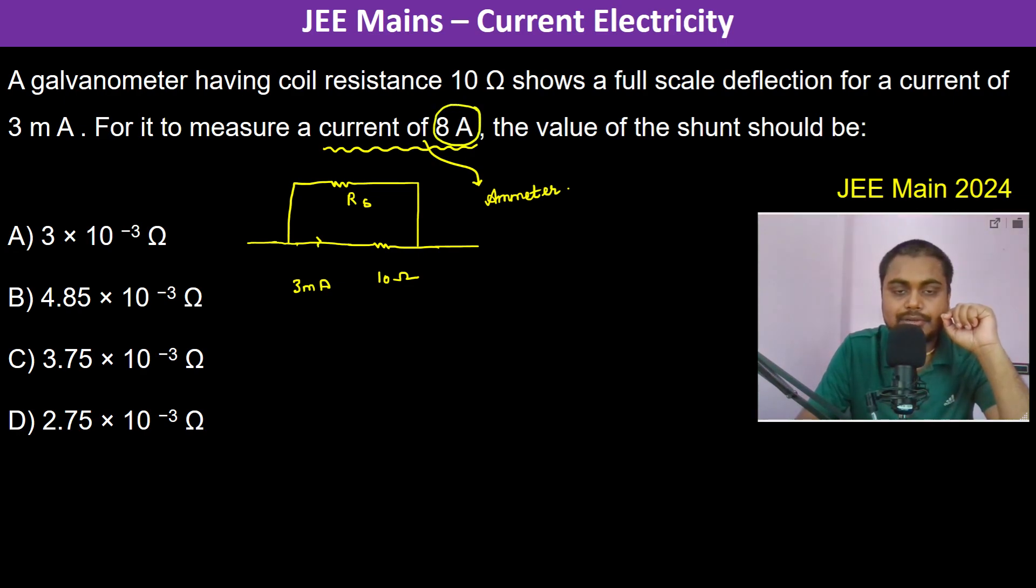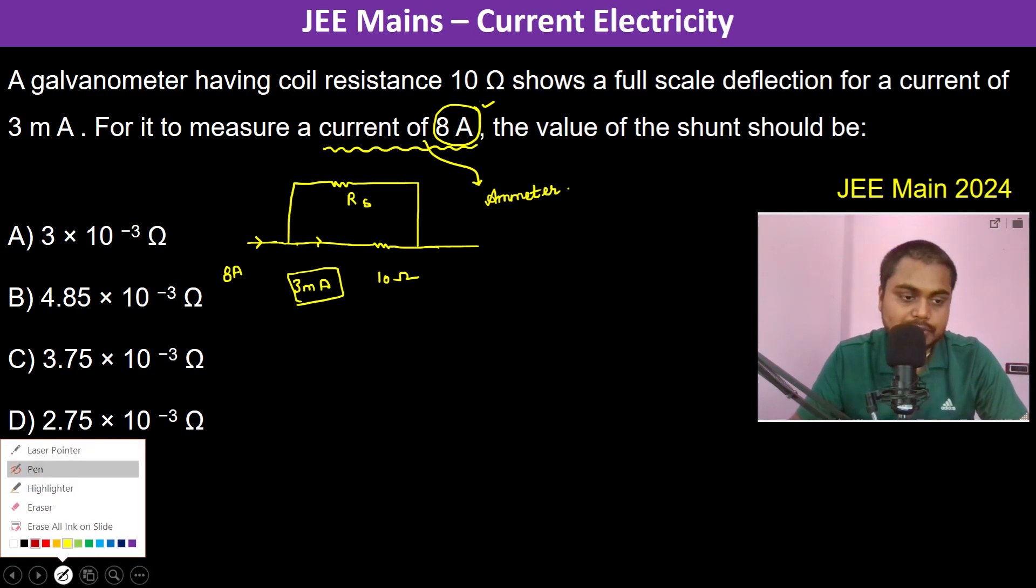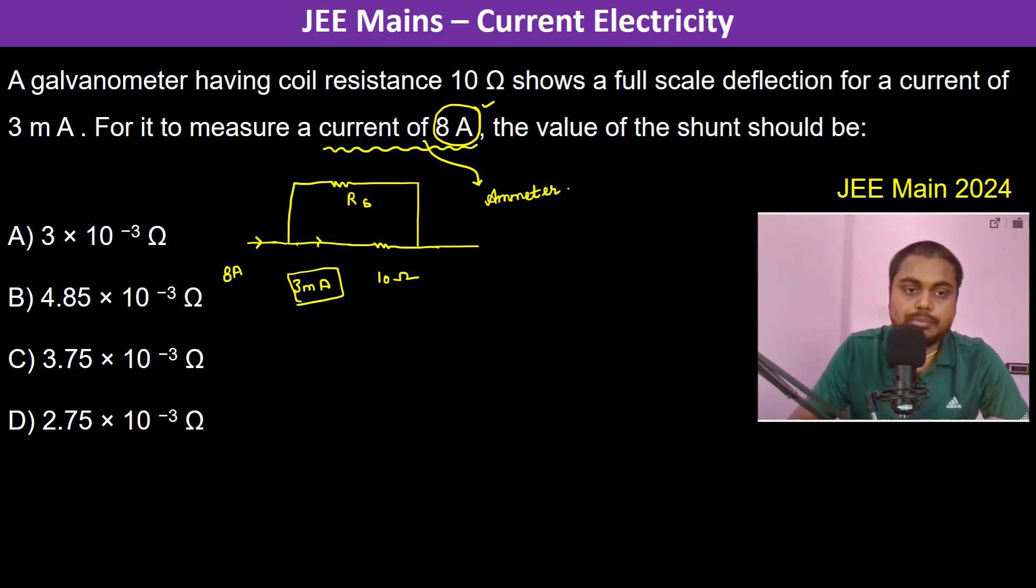Now it has to measure current of 8 ampere. So therefore 8 ampere should be in the circuit. But the capacity is only 3 milliampere. If more than 3 milliampere current passes, the galvanometer will get damaged.